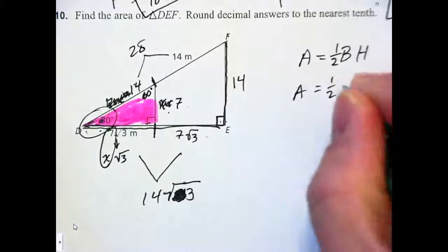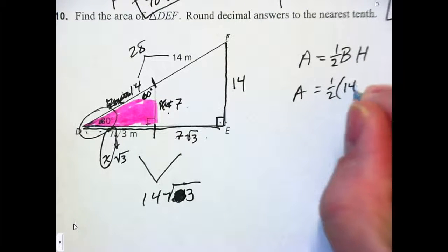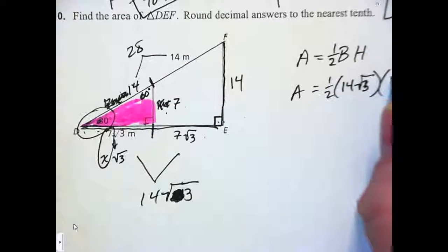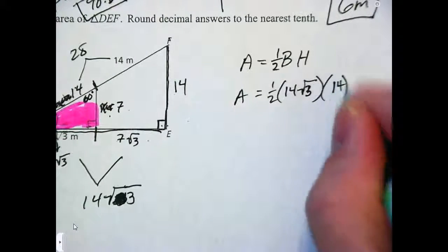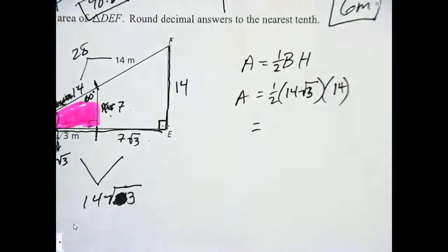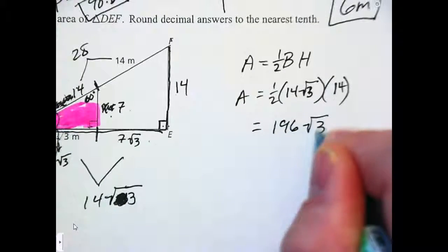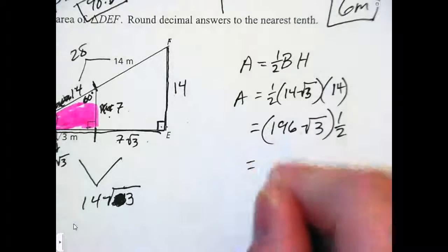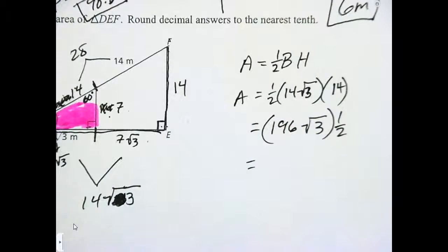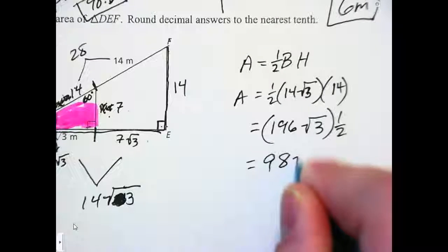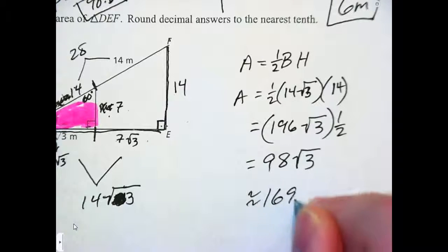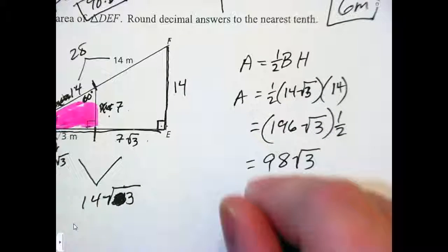Area is equal to 1 half base. What's my base? 14 root 3. I almost wrote root 13. And height is? 14. Okay. 14 times 14. Everyone do that in your head. 196. Nice job. 196 root 3 times 1 half. What is it? Half of 196. It is 98 root 3. 98 root 3 to the nearest tenth is 169.7 meter squared.